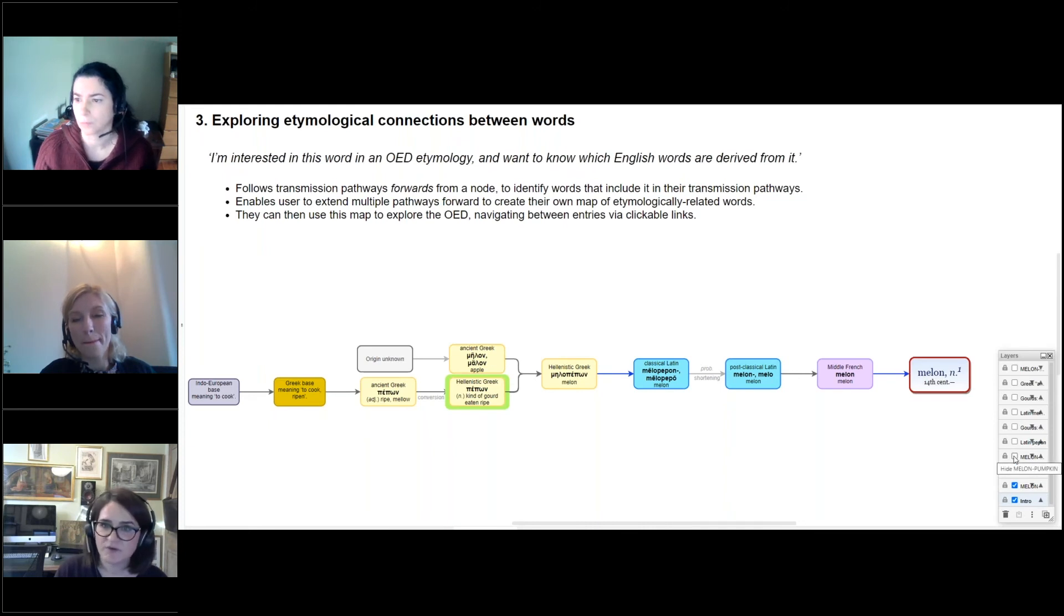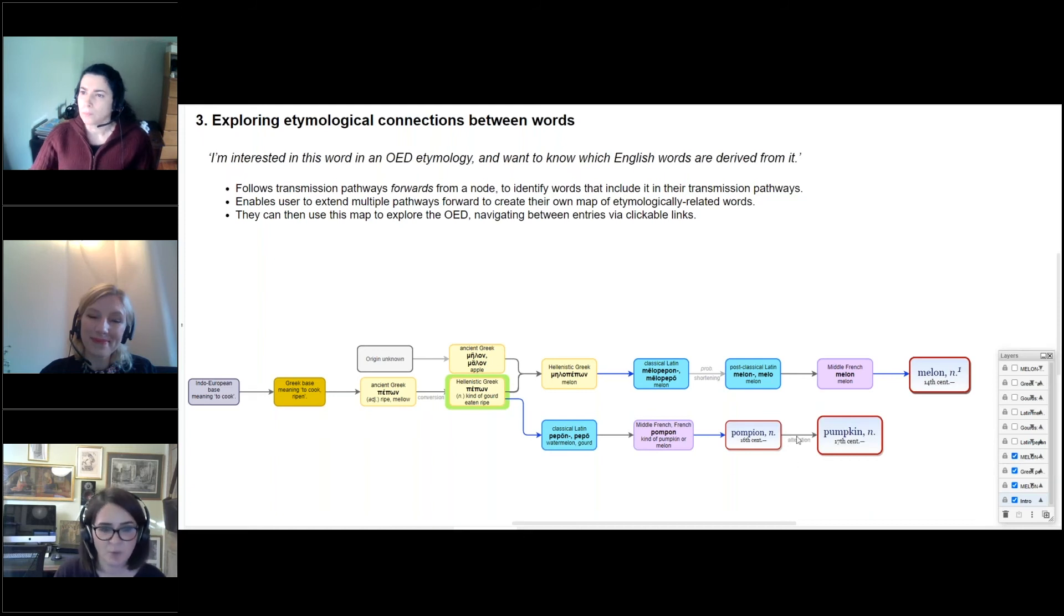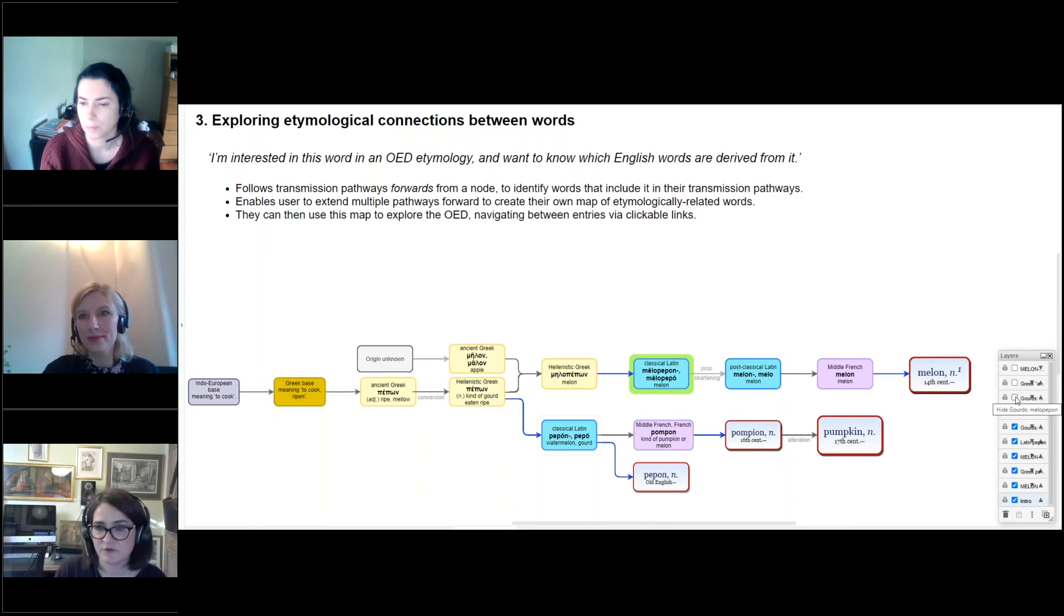This would show you then how this Greek word is also, at several removes, gives rise to two more English nouns denoting edible gourds, and that's pompeon here, and then by alteration of that, the noun pumpkin. Or you might wonder whether classical Latin pepon here ever gave rise to a word in English, and then expanding the pathway forwards from that node shows you that you're right. It was borrowed into Old English to give this word for a melon or pumpkin. And similarly, extending transmission pathways forwards from Latin melopepo brings you to a related word that you might not have known about at all, the obsolete 16th century loanword melopepon, which was used up until the mid 18th century for various types of squash. Or finally, by selecting the Greek word for apple, you could opt to see how that word is related to the name of another English fruit, and that's the peach.